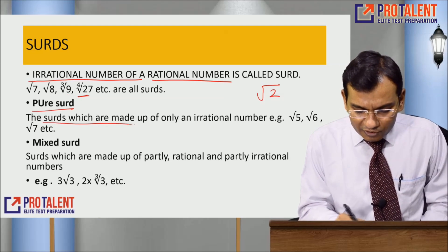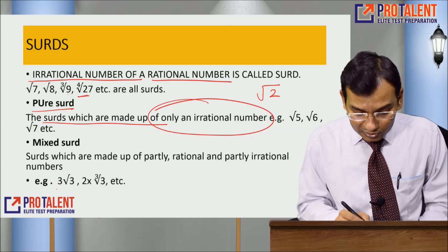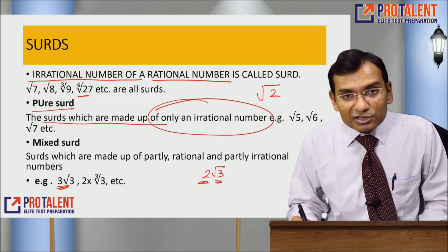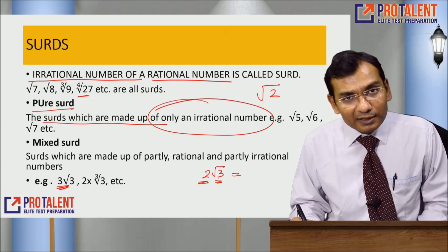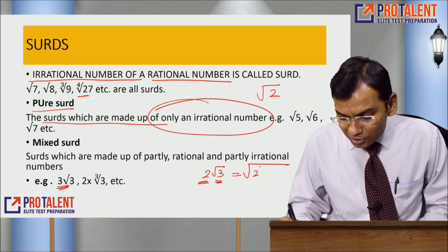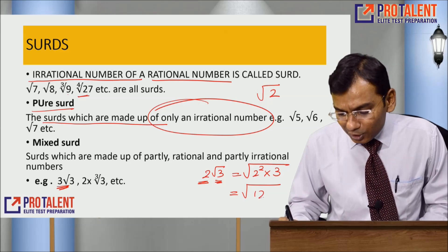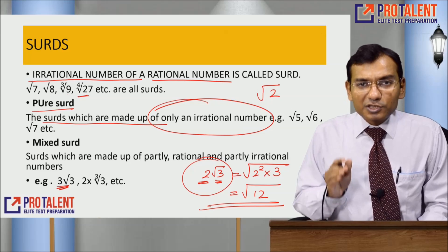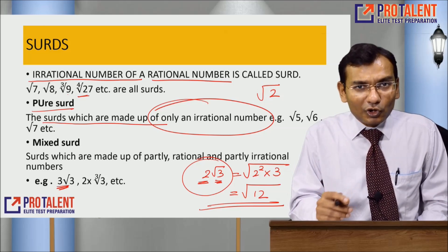What do you mean by pure surds? A pure surd is one which is made up of only an irrational number, like root 5, root 6, root 7. A mixed surd has a rational number combined with an irrational part, for example 2 root 3. So a pure surd is entirely irrational, and this is a mixed surd — it is partly rational and partly irrational.